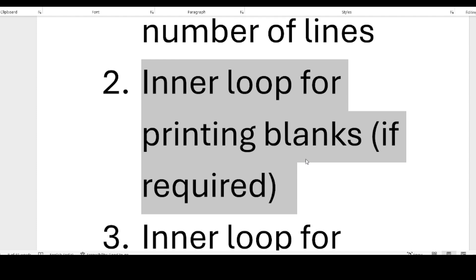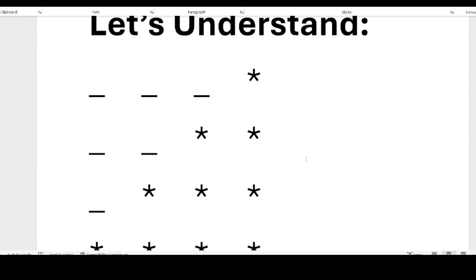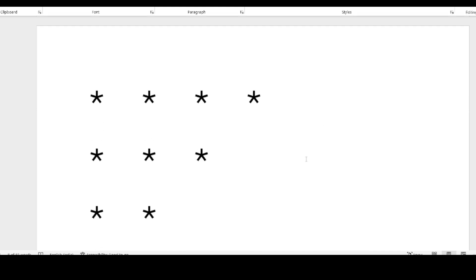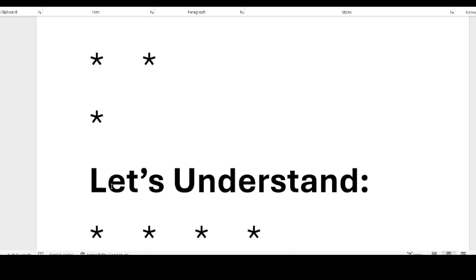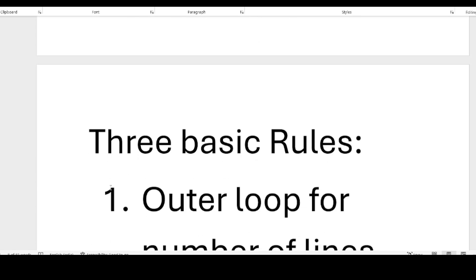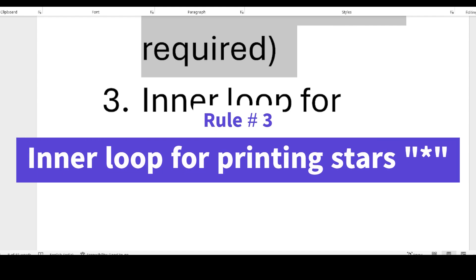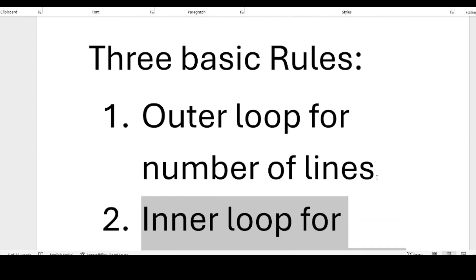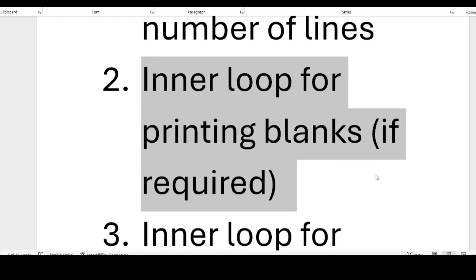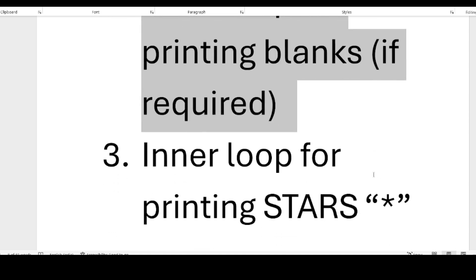In our first example we don't need blanks printed before the stars, so we can ignore that inner loop. The third rule is: there should be an inner loop for printing stars. So to summarize: rule one — outer loop for number of lines; rule two — inner loop for printing blanks; rule three — inner loop for printing stars. If blanks are not required, that inner loop can be skipped.